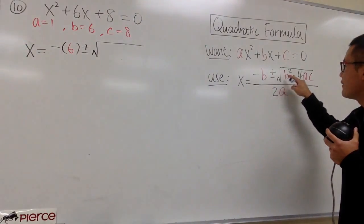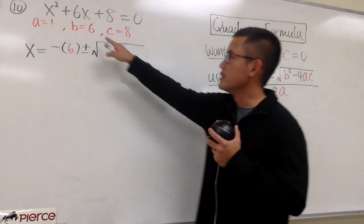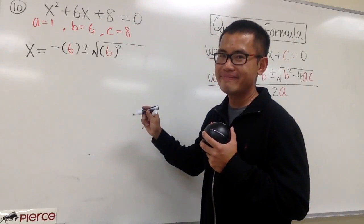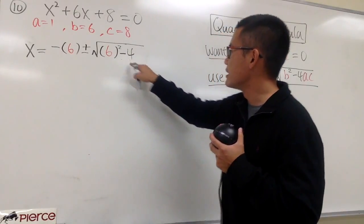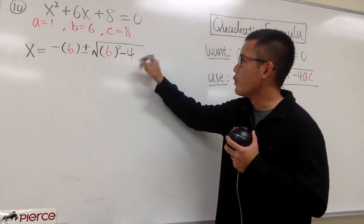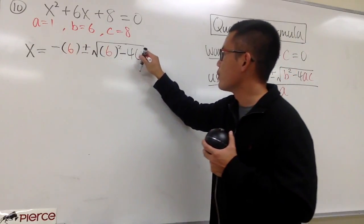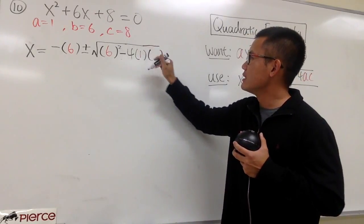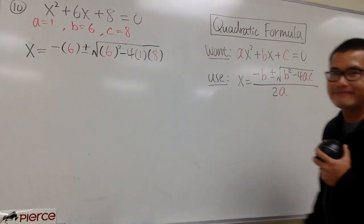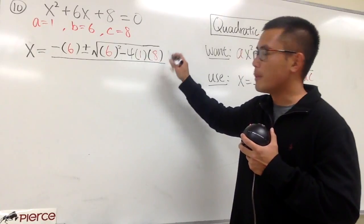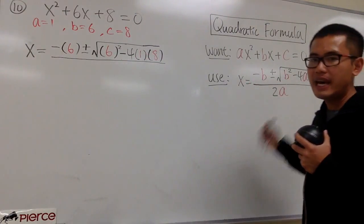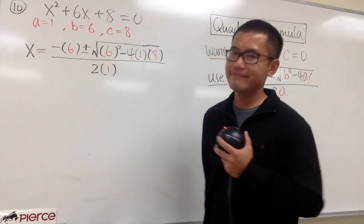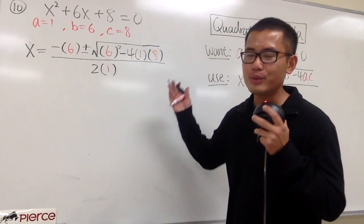Inside we have b squared — b is 6, so open the parentheses, put down the 6 inside, and then square that. Then the formula says we have to do minus 4, which means minus 4 times the a. The a value is 1. And c is 8. This is all over 2 times a, so we have 2 times 1. And this right here is the setup — now we just have to work this out.